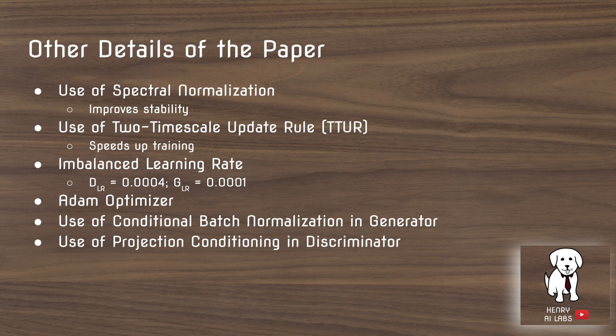For those looking to implement the self-attention GAN themselves, other details include spectral normalization, a two-timescale update rule, and specific learning rates for the Adam optimizer. They also use conditional batch normalization, where the gain and bias parameters of batch normalization are determined by the class label — so synthesizing a dog uses different mean and variance parameters than for cat or airplane images. Finally, projection conditioning in the discriminator is the mechanism for where conditional class label information is incorporated.